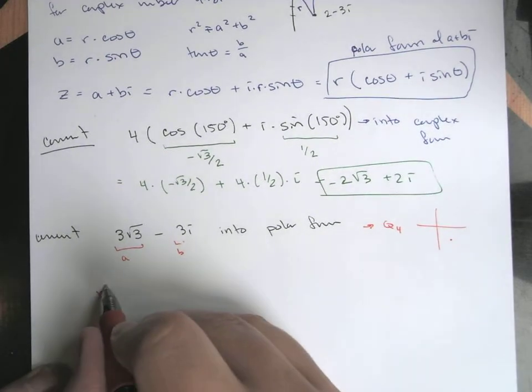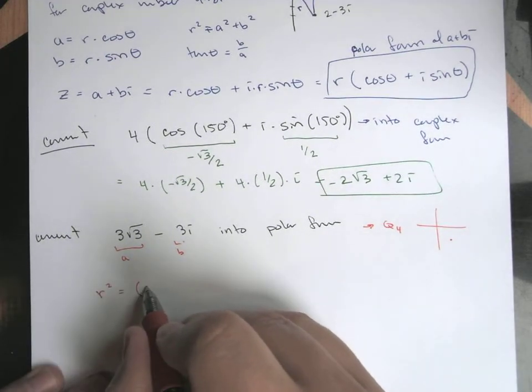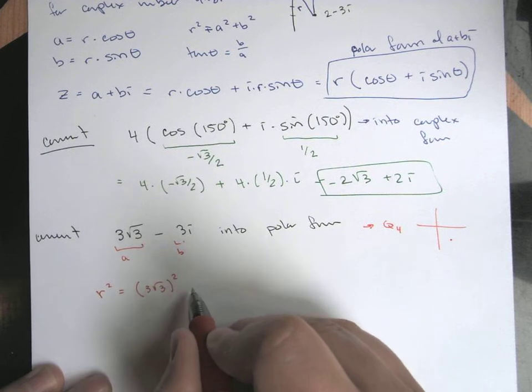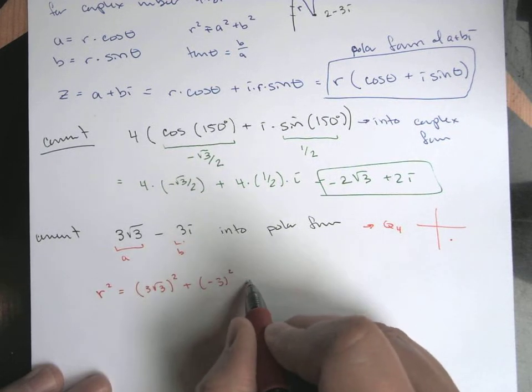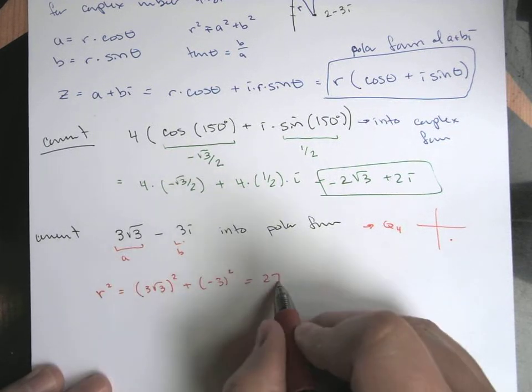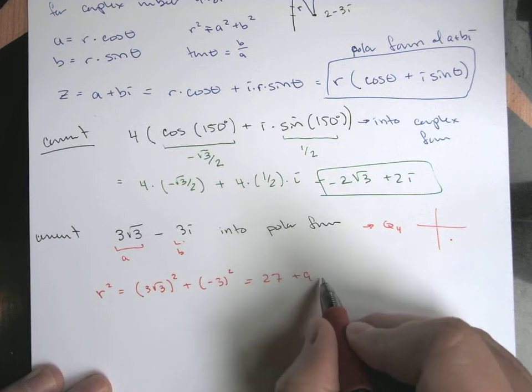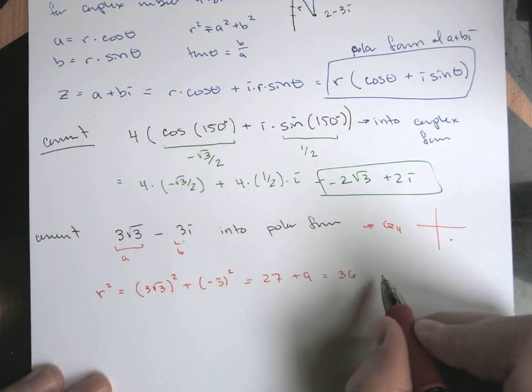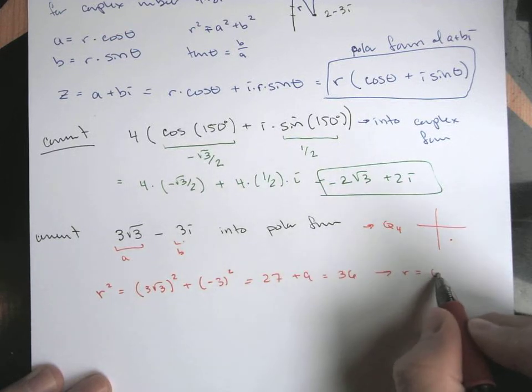You can find our radius here. So that's going to be 3 root 3 squared plus negative 3 squared. This is 9 times 3, so this is 27 plus 3 squared is 9. So that's 36. So the r value here would be 6.